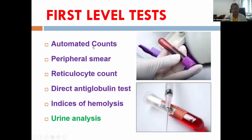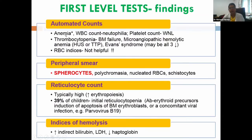For any child presenting with anemia, the first-level investigations are: automated counts, peripheral smear, reticulocyte count, direct antiglobulin test, other indices of hemolysis, and urine analysis. In warm AIHA the automated counts may show anemia with neutrophilia; platelet counts are usually within normal limits, but thrombocytopenia should raise suspicion of bone marrow failure, microangiopathic hemolytic anemia, or Evans syndrome.